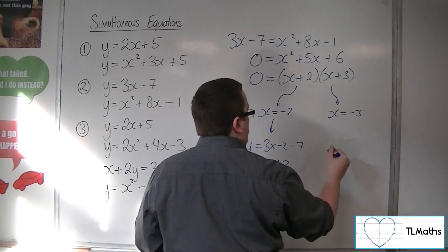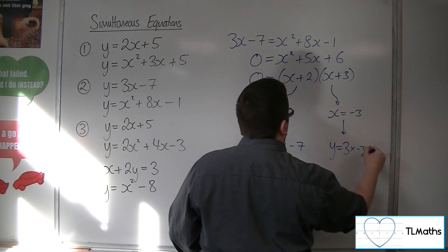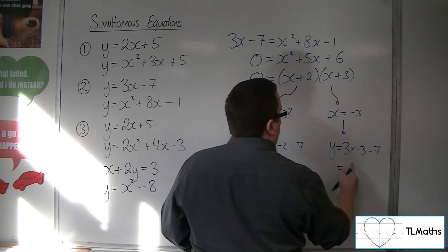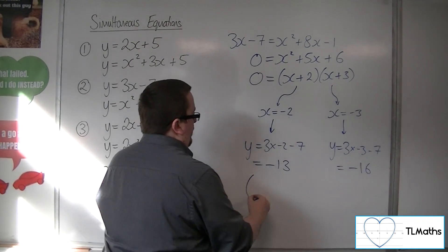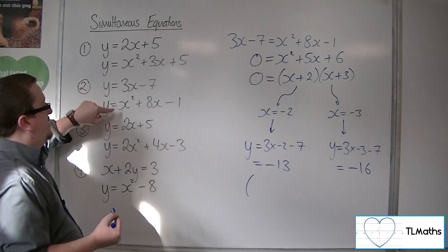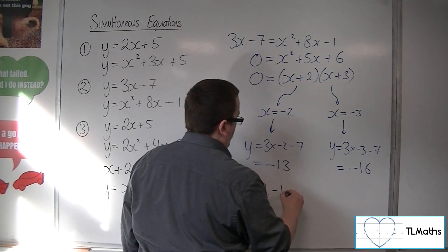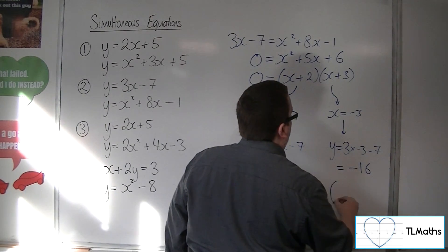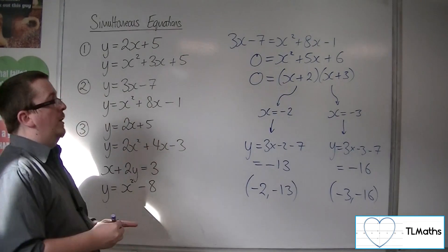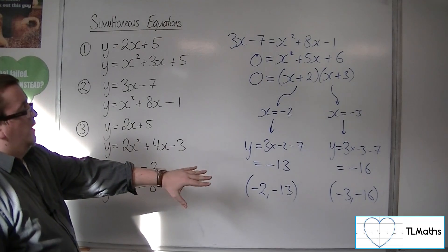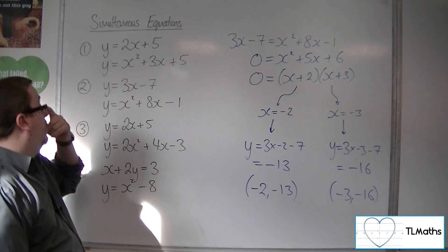When x equals minus 3, y equals 3 lots of minus 3, take away 7 — so minus 9 take away 7 is minus 16. So the line intersects the parabola at (−2, −13) and (−3, −16). Those are the two coordinates that satisfy these two simultaneous equations.